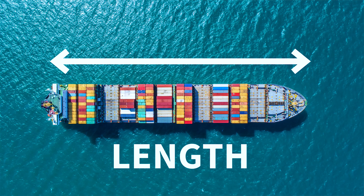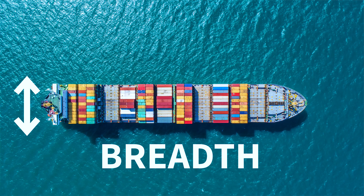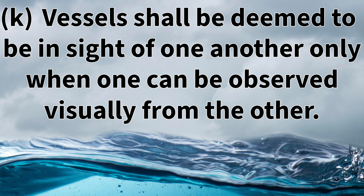Rule 3j states that the words 'length' and 'breadth' of a vessel mean her length overall and greatest breadth. Length means the overall length of the ship, and breadth refers to how wide the ship is at its greatest point.